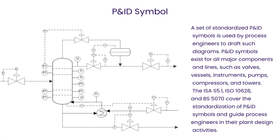A set of standardized PID symbols is used by process engineers to draw such diagrams. PID symbols exist for all major components and lines, such as valves, vessels, instruments, pumps, compressors and towers. The ISA S5.1, ISO 10628, and BS5070 cover the standardization of PID symbols and guide process engineers in their plant design activities.